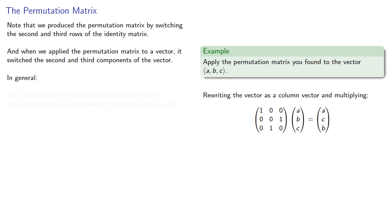And in general, the permutations of the rows of the identity matrix correspond to the permutations of the vector components.